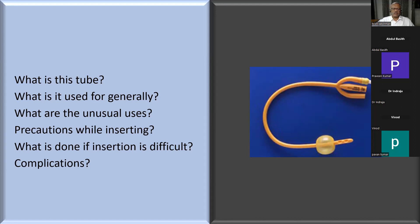There is one other condition where you do not catheterize, particularly in the female: urethral caruncle. It is a relative contraindication, not absolute. If the patient is in retention because of a caruncle, you have to specifically treat the caruncle first and then catheterize. Urethral trauma and caruncle in the female are two relative situations where you do not catheterize.